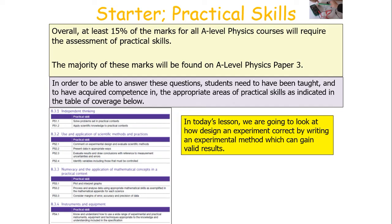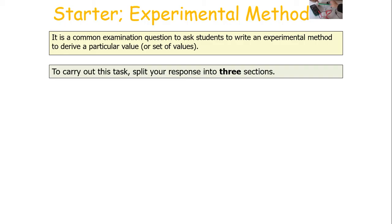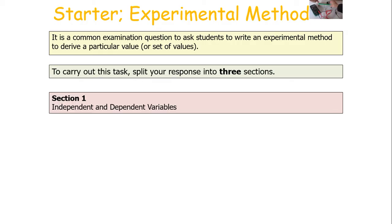So in today's lesson, we're going to look at how to design an experiment correctly by writing an experimental method which can gain valid results. It's a common examination question to ask students to write an experimental method to derive a particular value or set of values. To carry out this task and answer this question, you split your response into three different sections.